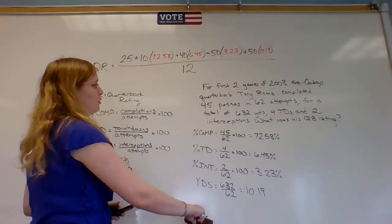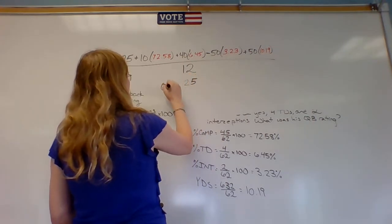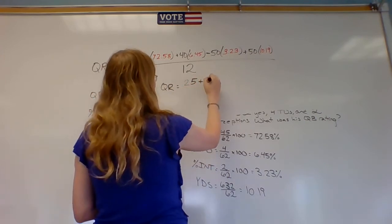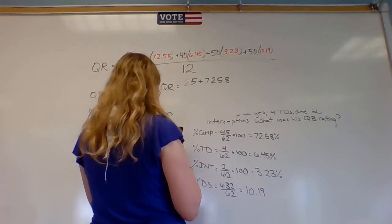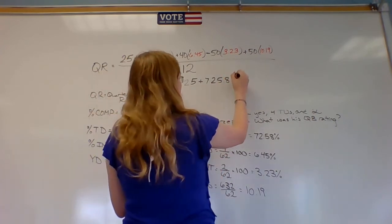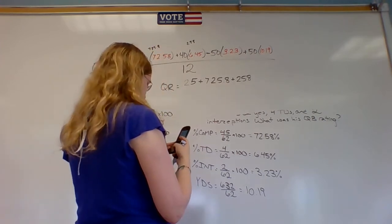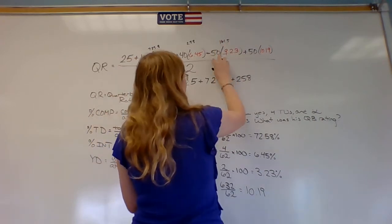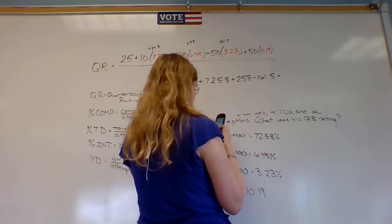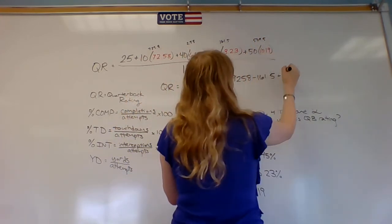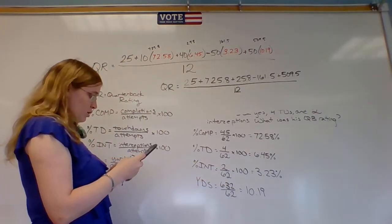Under that we've got 25 plus 10 times 72.58, that's 725.8, plus 40 times 6.45, that's 258, minus 50 times 3.23, that's 161.5, and then plus 50 times 10.19, that's 509.5, all over 12.